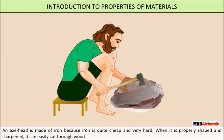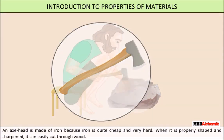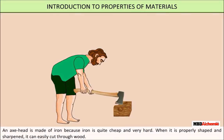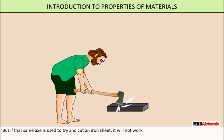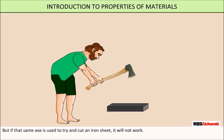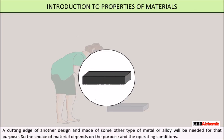An axe head is made of iron because iron is quite cheap and very hard. When it is properly shaped and sharpened, it can easily cut through wood. But if that same axe is used to try and cut an iron sheet, it will not work. A cutting edge of another design and made of some other type of metal or alloy is needed for that purpose. So, the choice of material depends on the purpose and the operating conditions.